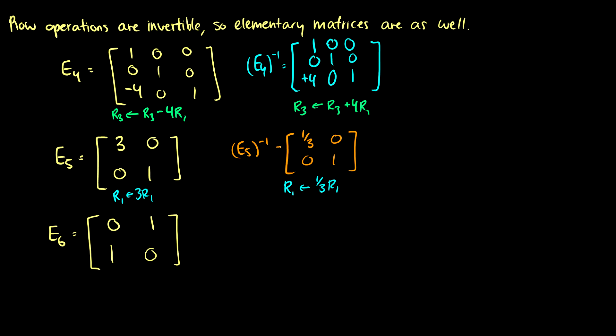You can check yourself that this works by multiplying the two matrices together, and you'll get the identity back. For instance, if we take E5 times E5 inverse, for our top left entry we're going to get 3 times 1/3 plus 0 times 0, so that's going to be 1. We get 3 times 0 plus 0 times 1, and 0 times 1/3 plus 1 times 0. And for our bottom right entry, we get 0 times 0 plus 1 times 1. So we get our identity matrix back, using the multiplication rules from a previous video.